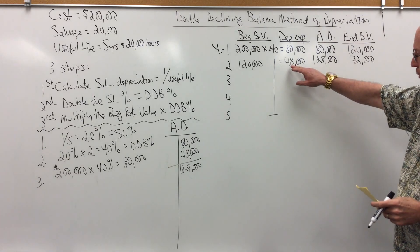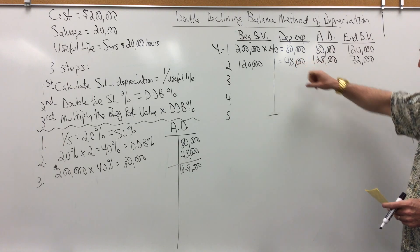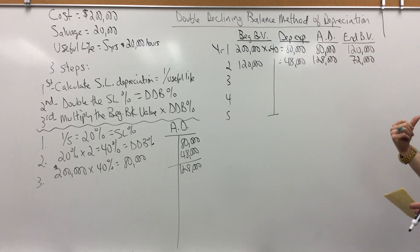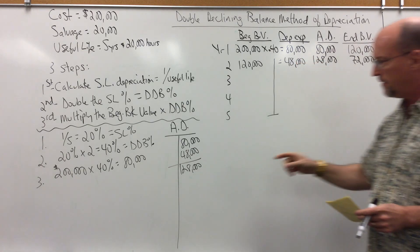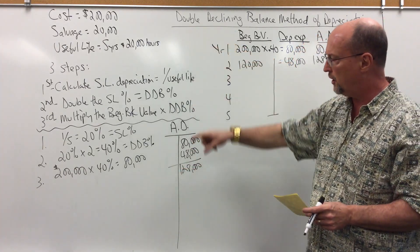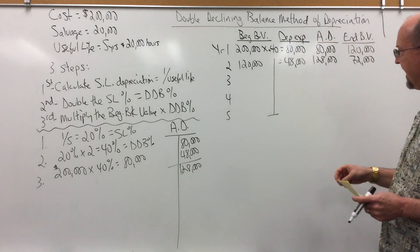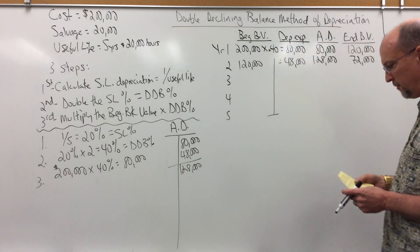Year 2 depreciation expense, debit depreciation expense, 48,000, credit accumulated 48,000. On the balance sheet, we show the equipment at its original cost of 200, and accumulated now at 128. So, we show the net book value of 72,000.